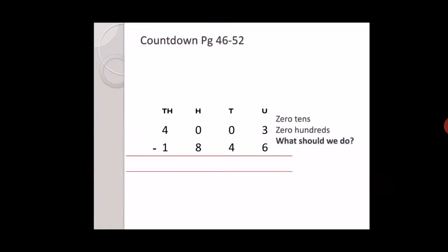From thousands place we borrow, hundreds place becomes ten. Now we have to borrow for tens. And here in thousands place it will be three.